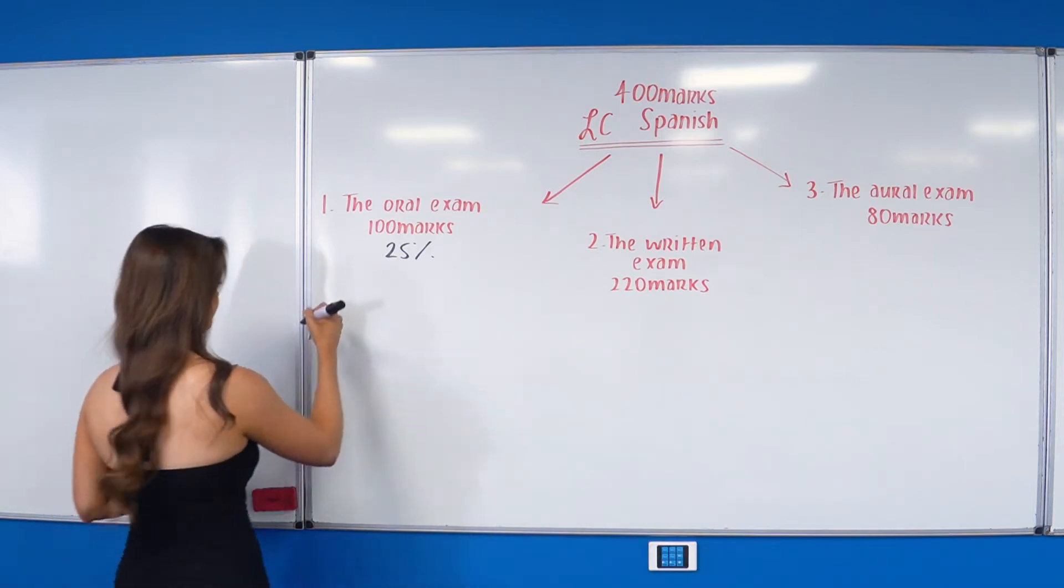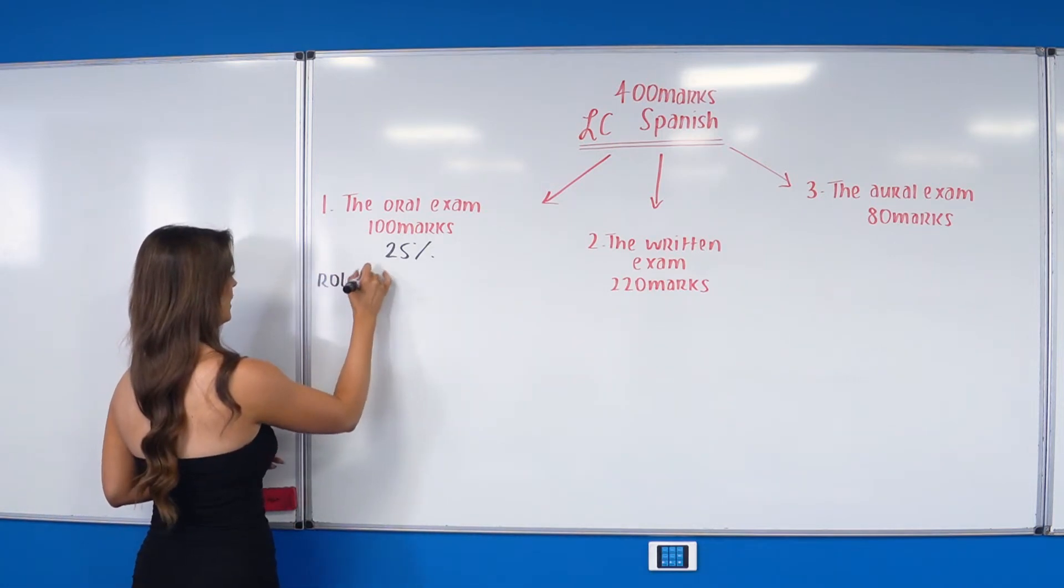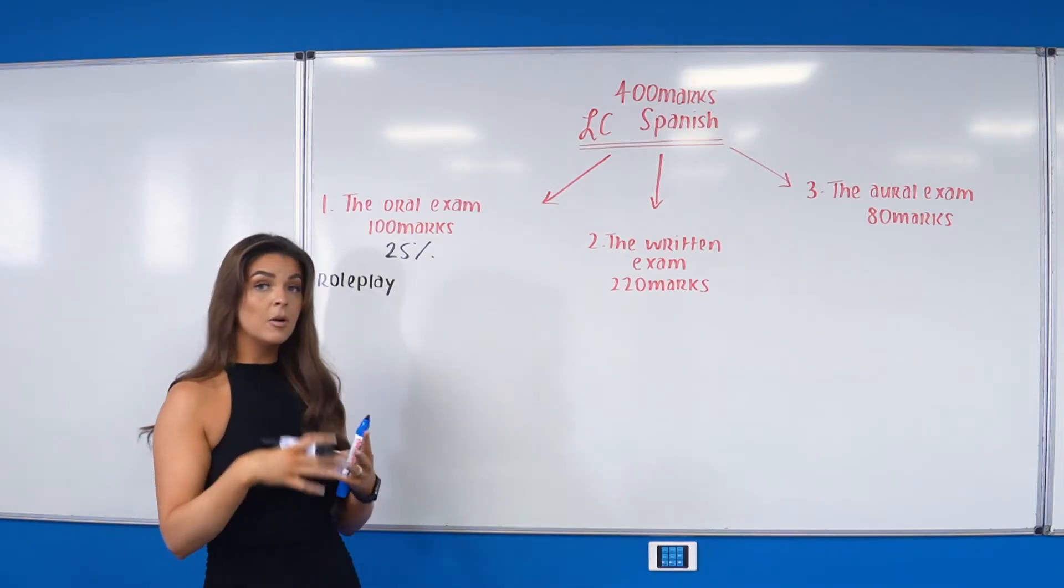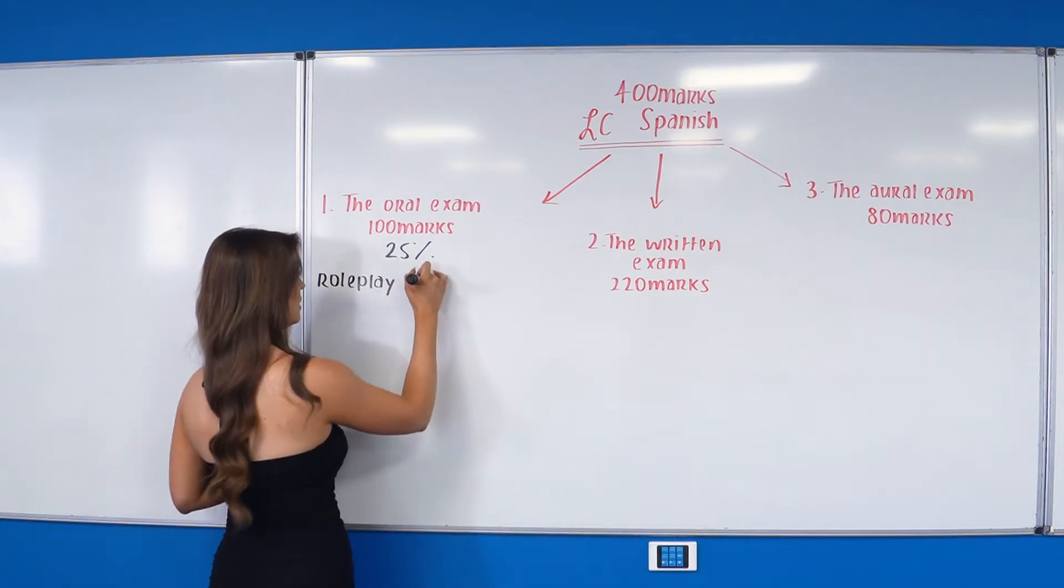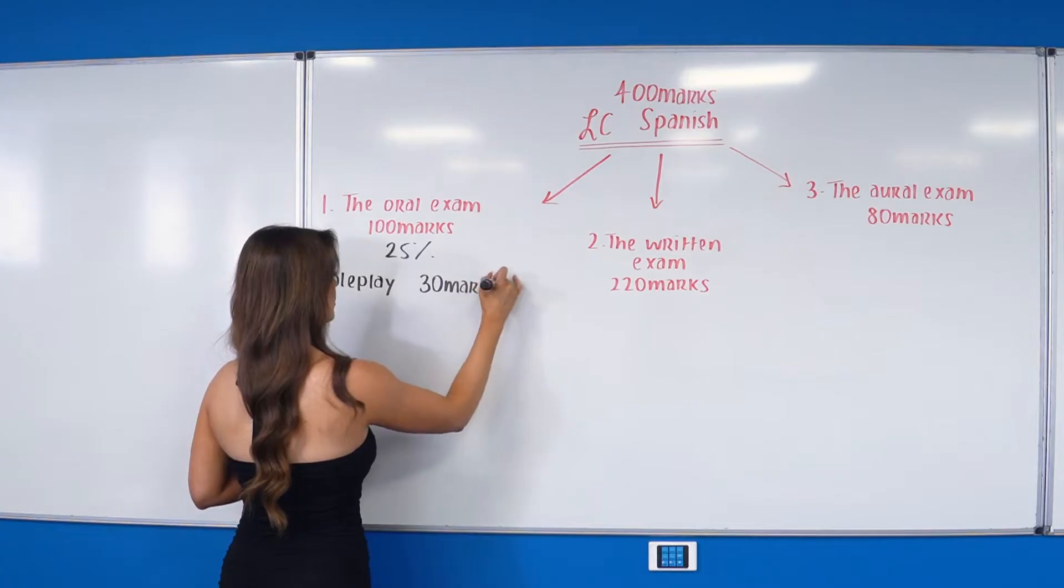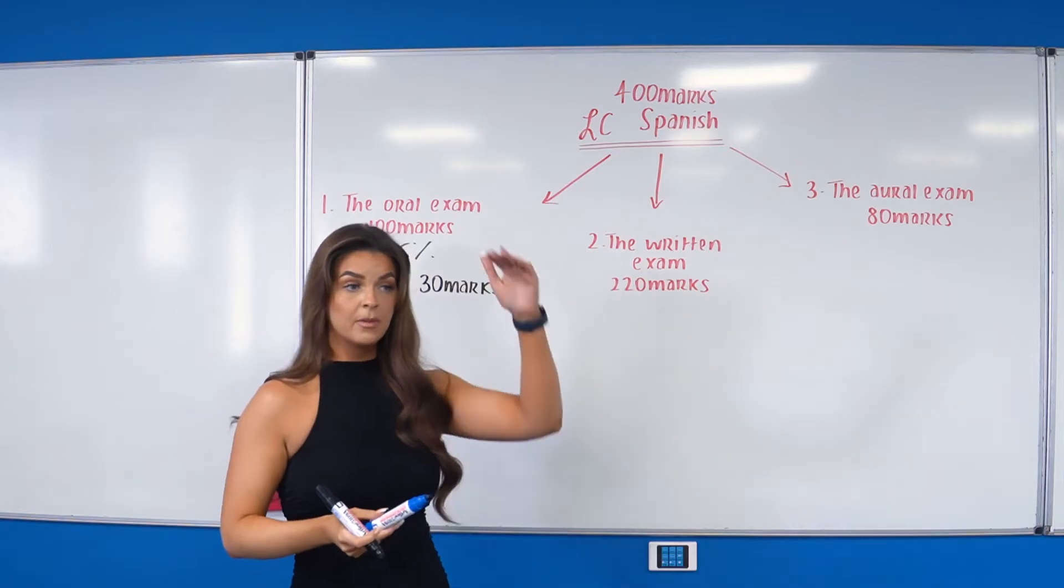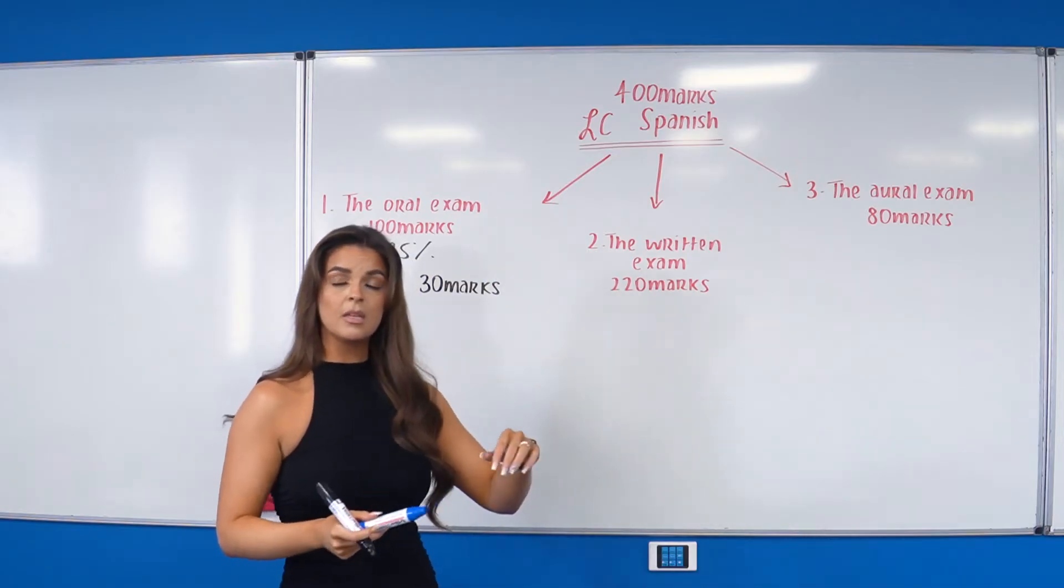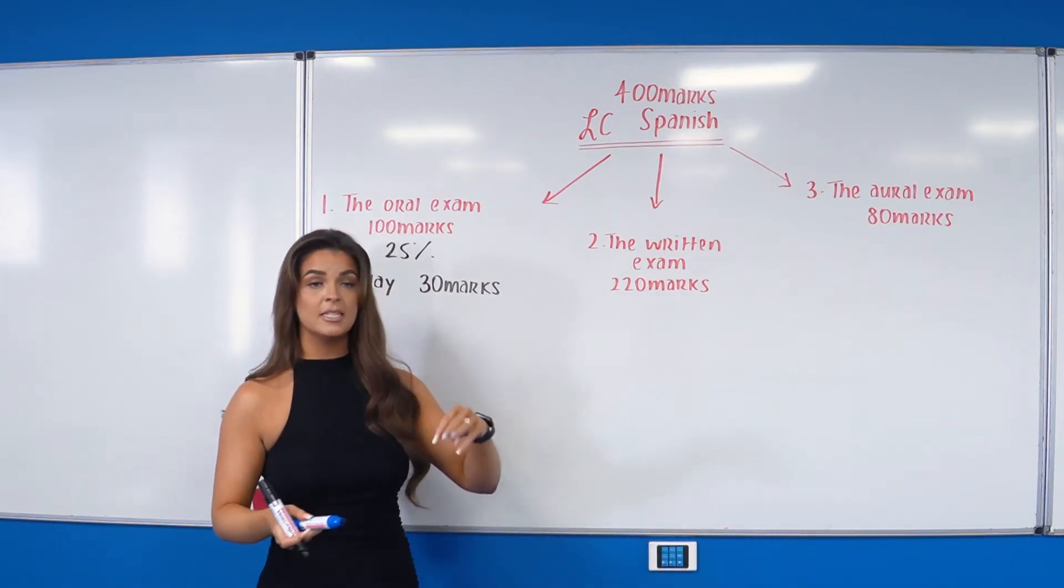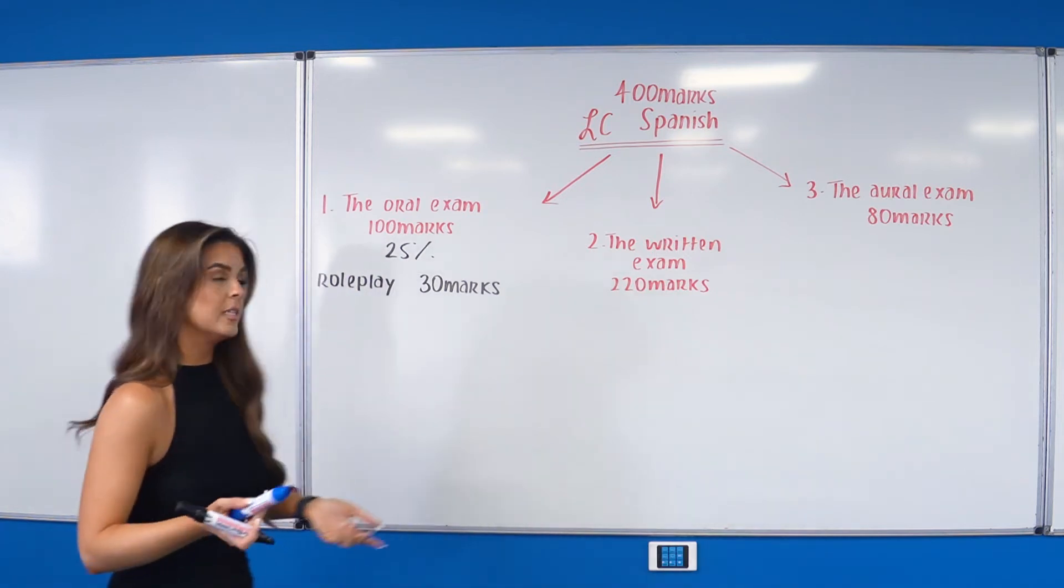Our role play is actually going to be the last thing that we do in our oral exam, and it's going to account for 30 marks of those 100 marks. The way that's going to work is there's going to be four things that you'll learn off which will get you 24 marks, so that'll be six, six, six, and six. And then the examiner will ask you one question that is relevant to the situation of the role play at the end, and based on your answer for that you will get the last six marks as well.